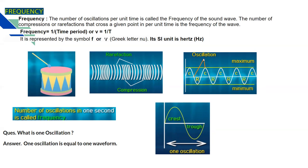Now what is one oscillation? One oscillation is equal to one waveform. Now we can give another definition of frequency: number of oscillations in one second. The number of oscillations per unit time is called the frequency. One oscillation means one waveform, meaning one crest and one trough.